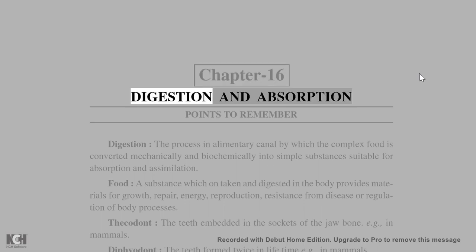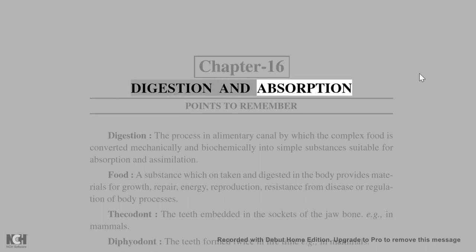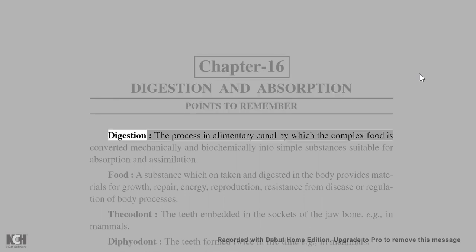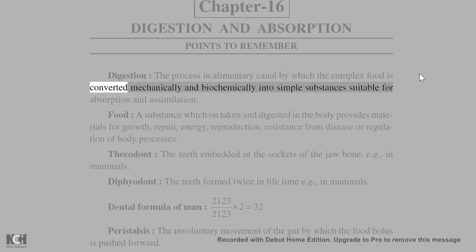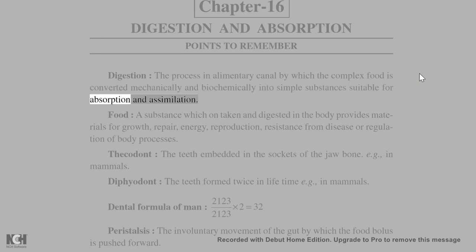Chapter 16: Digestion and Absorption — Points to Remember. Digestion: the process in the alimentary canal by which complex food is converted mechanically and biochemically into simple substances suitable for absorption and assimilation.